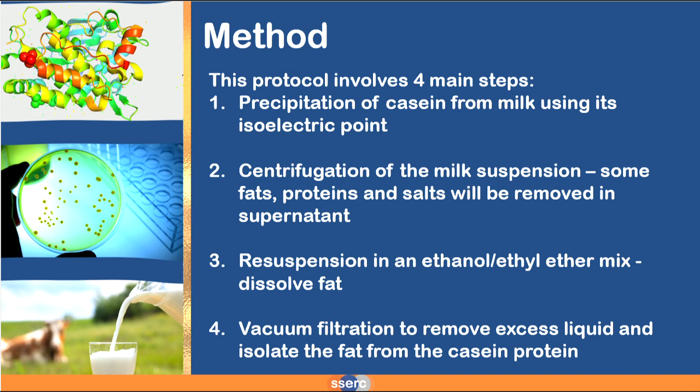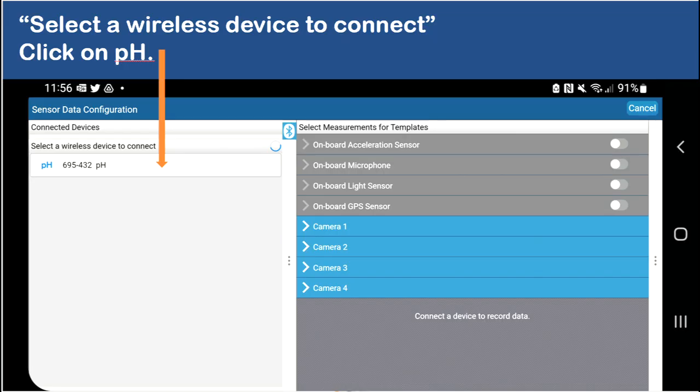...centrifuge it to take it down into the pellet, and then wash and dry the pellet so we can get the dry mass of the protein. We're going to use a Pasco pH sensor as part of that isoelectric point part of the protocol.